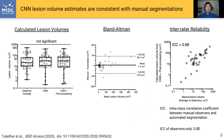Importantly, lesion volume estimates from the CNN are consistent with manual segmentations. We showed this in multiple ways. First, we compared the calculated lesion volumes from CNN methods to manual segmentations from multiple observers and saw that there were no significant differences between the manual segmentations and CNN segmentations before or after post-processing.